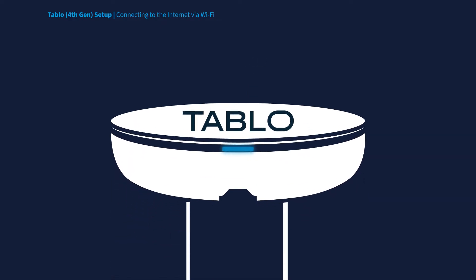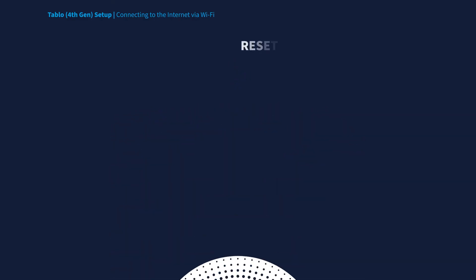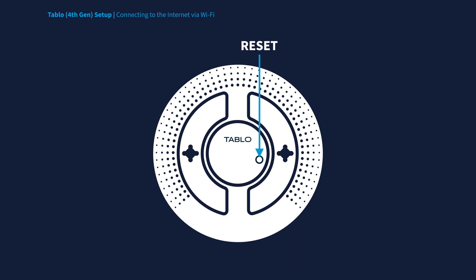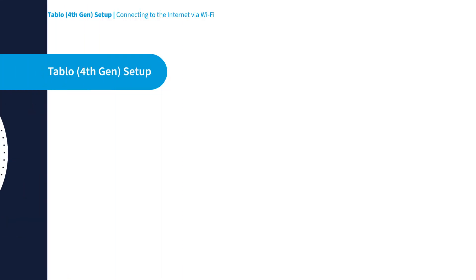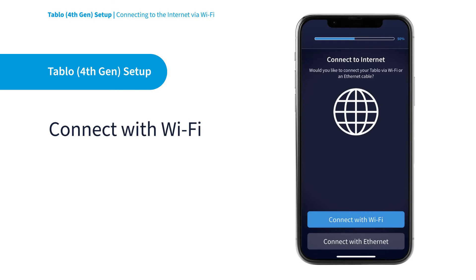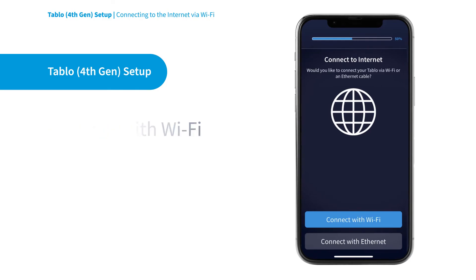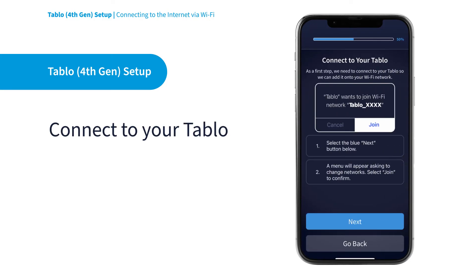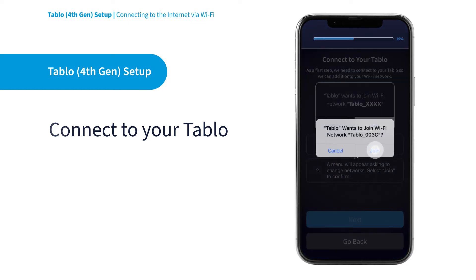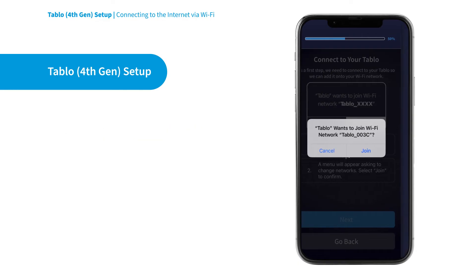Look at the LED light on the Tableau — it should be pulsing. If it's not pulsing, hit the Reset button on the bottom of the Tableau device and wait for it to reboot. Now, go to the Tableau app and select Connect with Wi-Fi. Your Tableau will begin broadcasting its own unique Wi-Fi network. Hit the Next button and select Join in the pop-up window to connect to it.